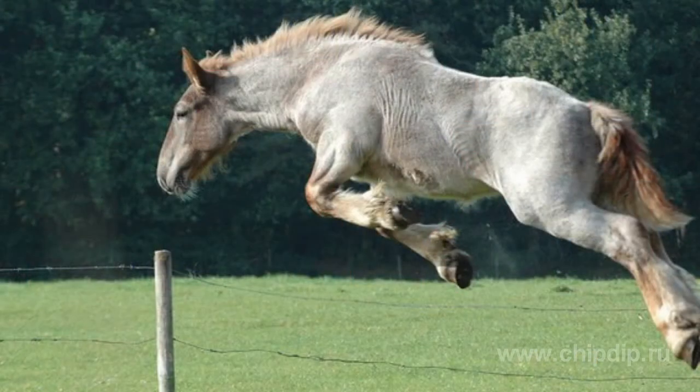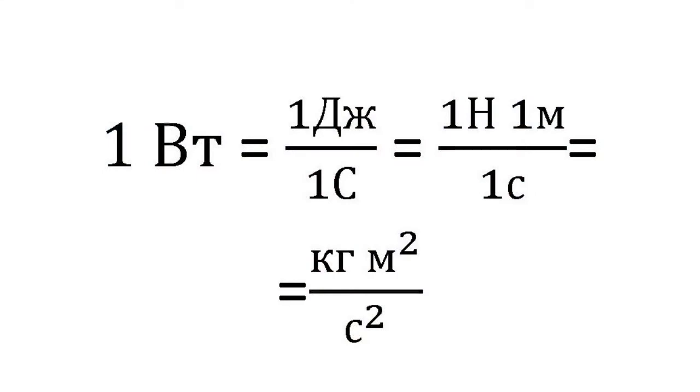Watt is a relatively new unit, introduced in the late 19th century. Prior to that, the well-known unit horsepower was used to measure power, and its value can vary between countries. Mechanical power can be expressed in newtons, meters, and seconds; and newtons, in turn, according to Newton's second law, can be expressed in kilograms, meters, and seconds.